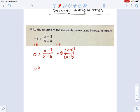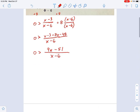And now this is going to be 0 is greater than something over x minus 6. And that something is going to be x minus 3 plus 8x minus 48, which we can simplify further to get to 0 is greater than 9x minus 51 over x minus 6. So now I'm ready to build a sign array.